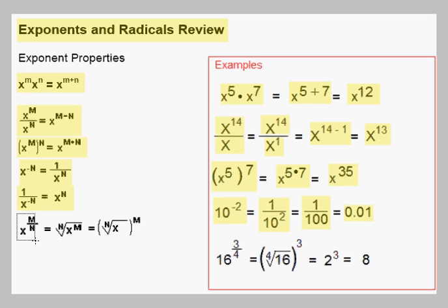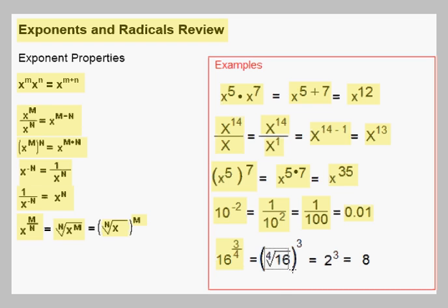Finally, we have the rational exponent definition. x to the m over n power equals the nth root of x to the m, but we can also define it as the nth root of x all raised to the m power. Here's an example: 16 to the three-fourths. By definition, that's the fourth root of 16 raised to the third power. The fourth root of 16 is just 2 because 2 times 2 times 2 times 2 is 16. We raise that to the third power and we get 8. The other definition would require taking the third power of 16 first and then taking the fourth root of that — we'd still get 8, but it would be a bit more work.